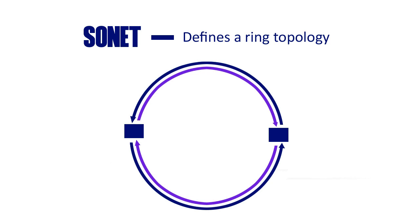SONET defines a ring type topology, and it doesn't require an actual ring, but when you look at a SONET ring, you see how it has a kind of fault tolerance built into it in case a line is lost, disconnected, or cut. Most of the telecommunication networks across the world have their optical pipes set up using SONET rings.